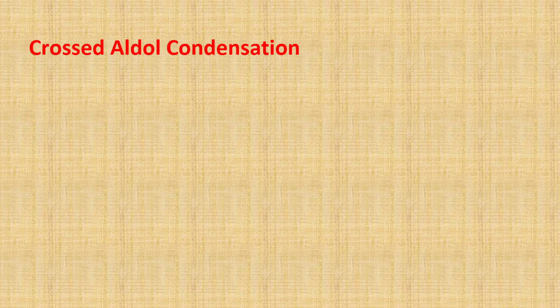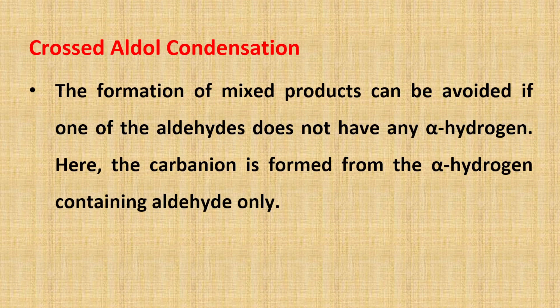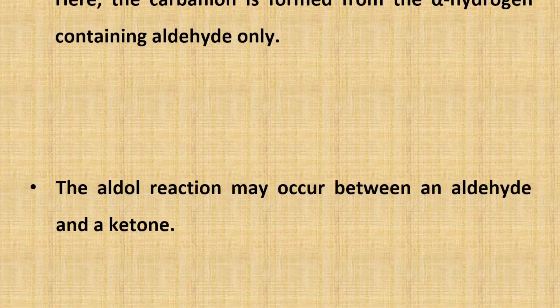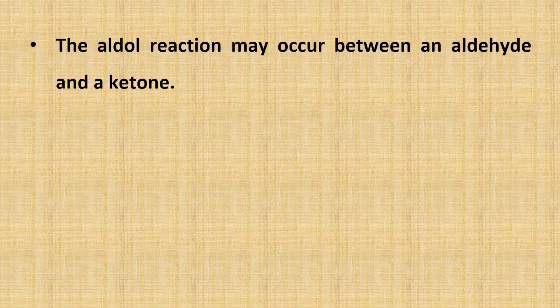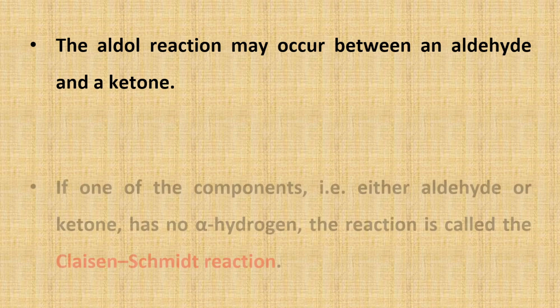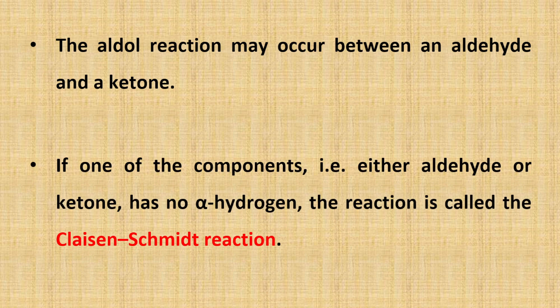The next topic is cross aldol condensation. In a mixed aldol condensation, if one of the aldehydes does not have any alpha hydrogen, then the formation of mixed products can be avoided. Here, the carbanion is formed from the alpha-hydrogen-containing aldehyde only. Moreover, the aldol reaction may also occur between an aldehyde and a ketone. If one of the components — either the aldehyde or the ketone — has no alpha hydrogen, the reaction is called the Claisen-Schmidt reaction.